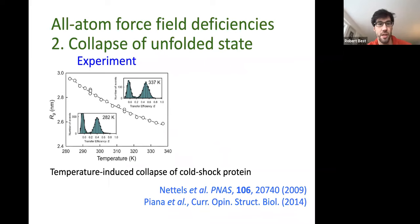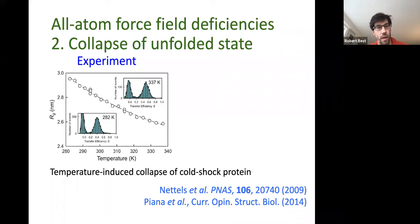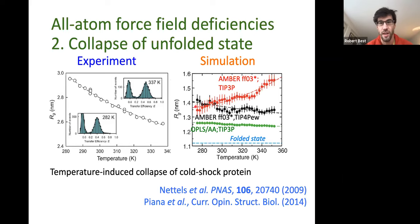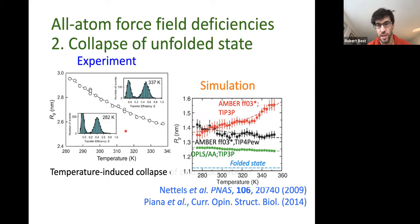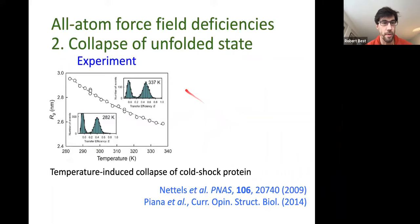The second problem is that unfolded states are too collapsed in simulations. In experiments one can measure the radius of gyration of an unfolded protein, and interestingly the chain collapses with increasing temperature because the hydrophobic effect gets stronger. Qualitatively, some force fields with more recent water models capture this collapse, but if you align the two axes, the simulation is not even on the same scale as the experiment — the force field predictions are much too collapsed.